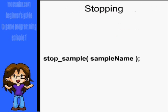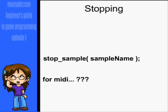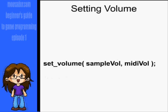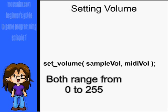If you want to stop a sample that's playing, use the stop_sample function. The only parameter is the name of your sample. For MIDI, I don't see a stop function in the quick reference, so I guess turn the MIDI sound down when you don't want it anymore. To set the volume of each, use the set_volume function — the first parameter is the sample volume and the second is the MIDI volume.